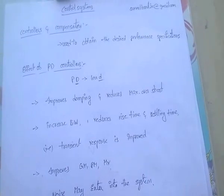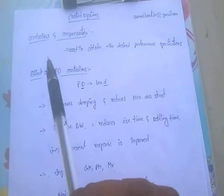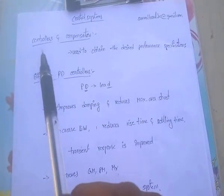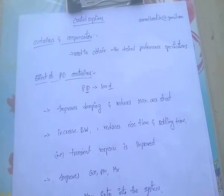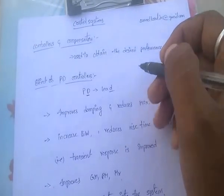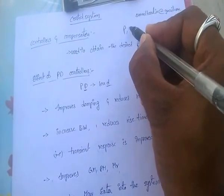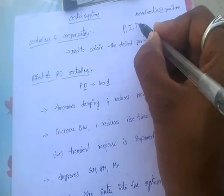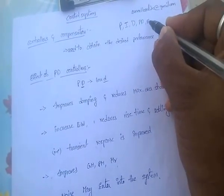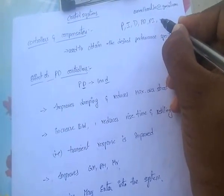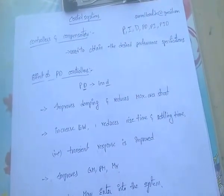Controllers and compensators are used to obtain desired system performance specifications. The main controllers are: proportional controller (P controller), integral controller, derivative controller, PD controller, PI controller — that is proportional-integral controller — and PID, which is proportional, integral, and derivative controller. These are the main controllers.